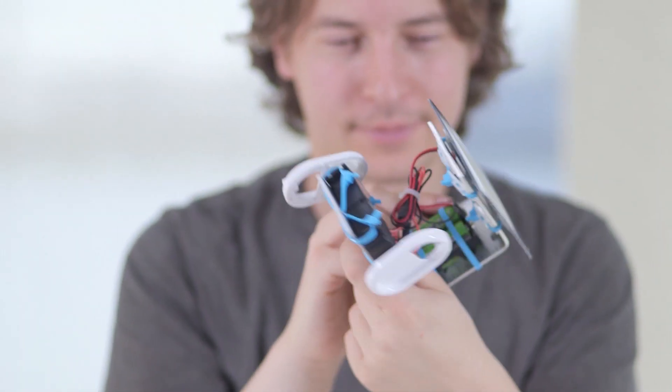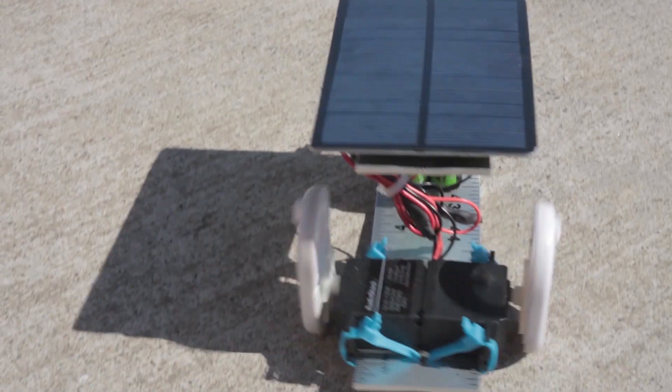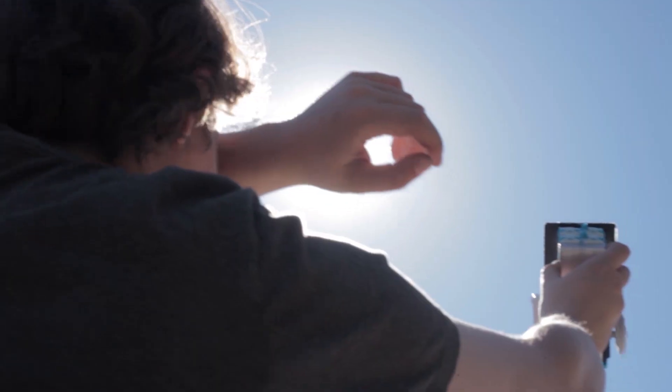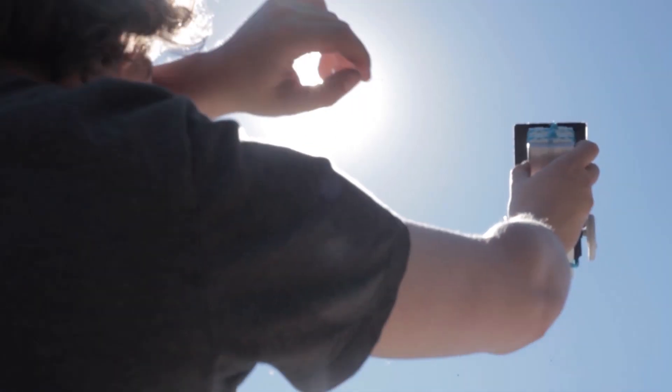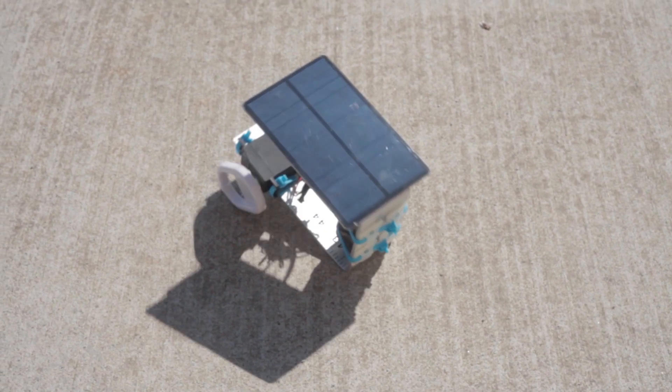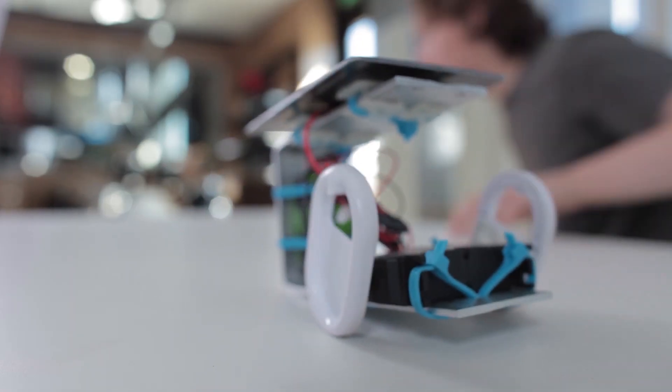One thing I found while building this robot, you don't really know whether or not it's working while you're making it. So while you're putting it together, you should always go outside and see if it's doing what you think it should do, and then go back inside and keep tinkering. This is a fun little project to get started with robotics and basic solar power.